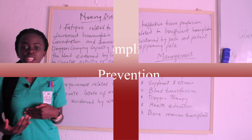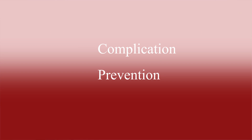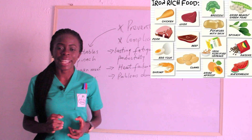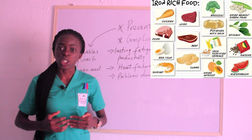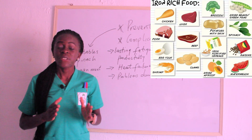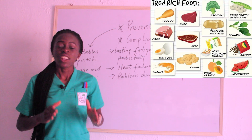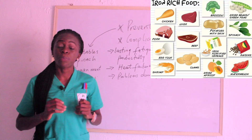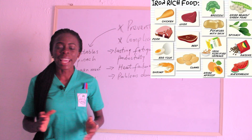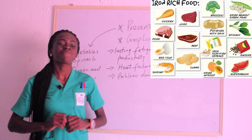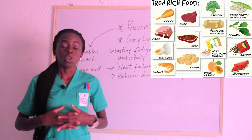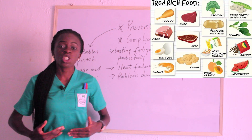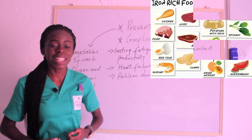In terms of prevention, emphasis should be on diet. Patients should be encouraged to take food rich in iron, vitamin B12, folates, and also vitamin C, because these are very important in the production of red blood cells. Foods like dark green vegetables, spinach, soybeans, and fruits like oranges, apples, and pears — patients should be encouraged to take these to prevent anemia.